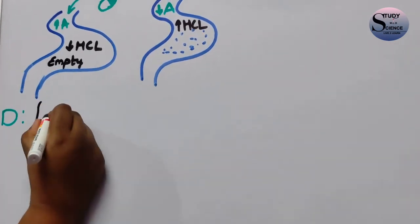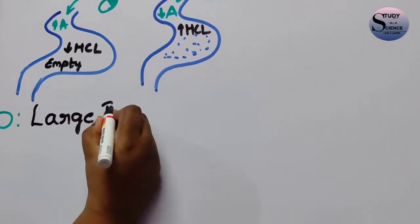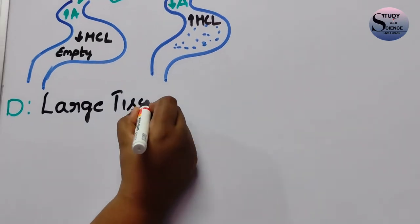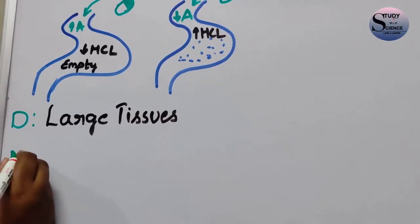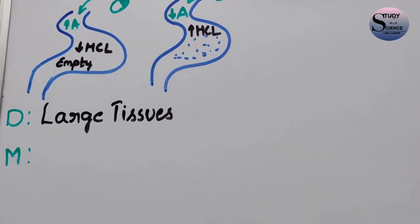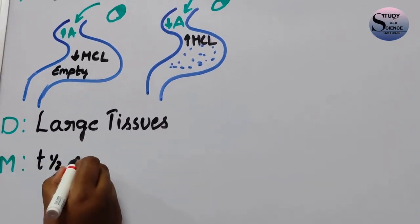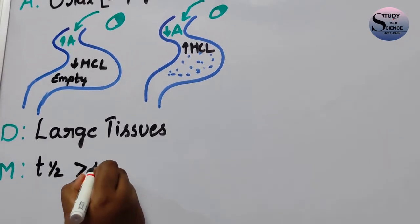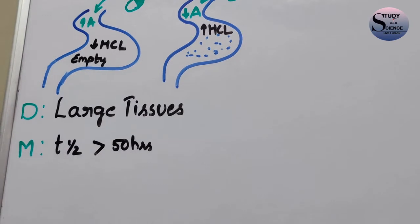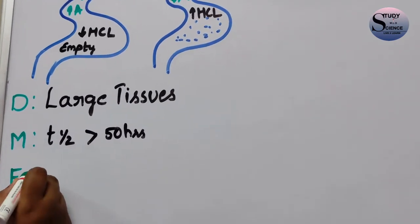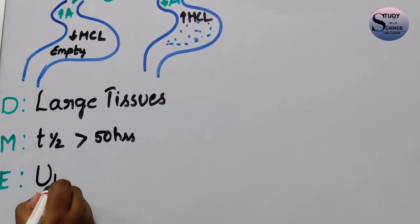Regarding distribution, Azithromycin is well distributed to all body parts and larger tissues. The metabolism occurs in the liver, and the half-life is greater than 50 hours. Excretion occurs mainly unchanged in the bile and also in the urine through the kidneys.